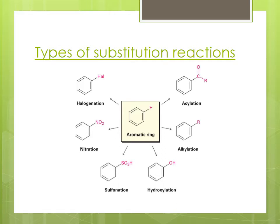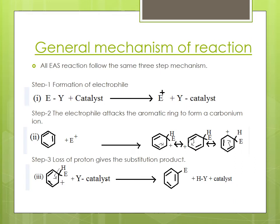Coming to the general mechanism of the reaction, there are three common steps. Step 1: Formation of the electrophile. Step 2: The electrophile attacks on the aromatic ring to form a carbonium ion. Step 3: Loss of a proton gives the substitution product. A catalyst helps to make the electrophile, which carries a positive charge.